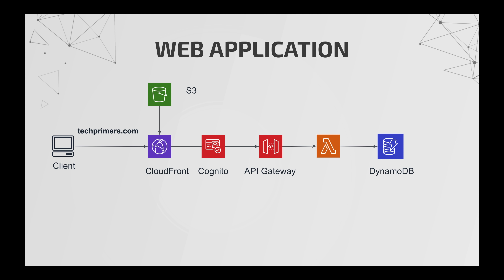If people are not going to use the dynamic feature inside the website, I won't be charged because my Lambdas won't be triggered until somebody uses that feature. And I don't have to worry about how many people are going to use techprimers.com because Lambda is a managed service and Amazon will scale it up and down based on need. This is a classic example of using serverless architecture for creating a web application.